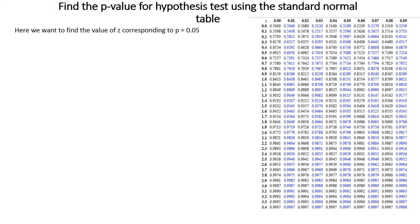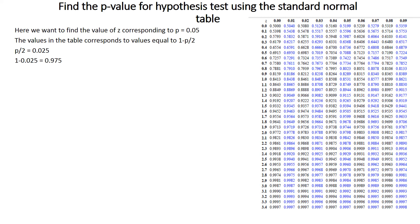There is a formula to find the corresponding value to search inside this table: 1 minus P divided by 2. We first halve the probability we are given. For example, if P equals 0.05, then P/2 equals 0.025. Then we subtract from 1: 1 minus 0.025 equals 0.975. So we search for 0.975 inside the table rather than 0.05 directly.